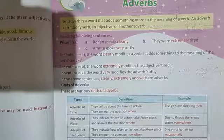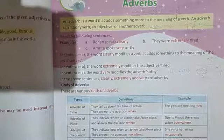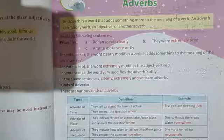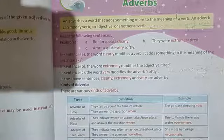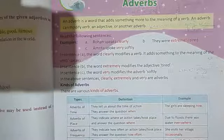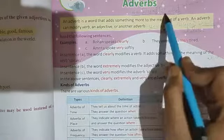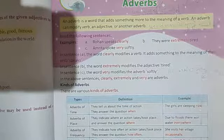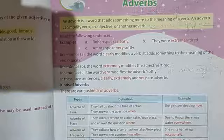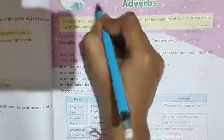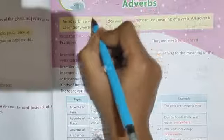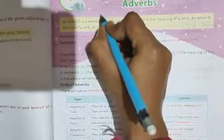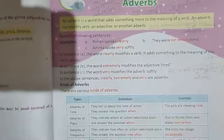So, what is the work of an adverb? Adverb is a word that adds something more to the meaning of a verb or an adjective or even an adverb. So, an adverb gives information, more information about a verb, about an adjective, about an adverb. Adverb modifies verb, adverb modifies adjectives and as well as adverbs.